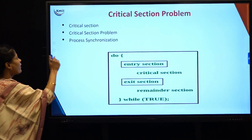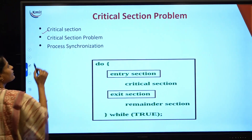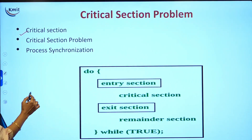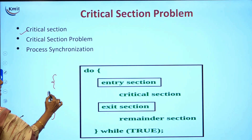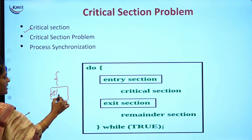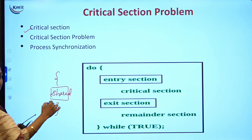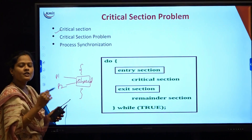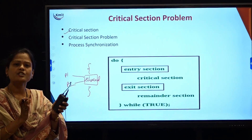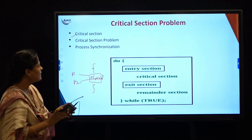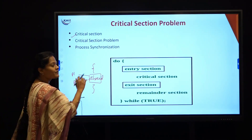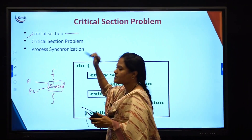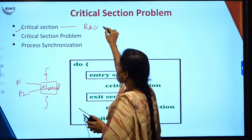The first concept we need to deal with is the critical section. A critical section is the part of the program — or the variables — which you want to be shared, meaning they are to be used by more than one process simultaneously. That particular part of a program where it is shared by multiple processes, we call that a critical section. Because of this critical section where we are allowing multiple processes, we get the problem of a race condition.